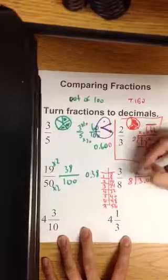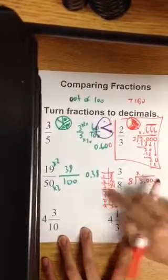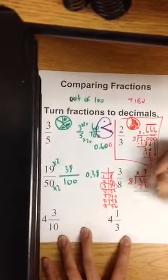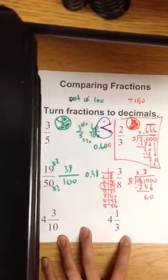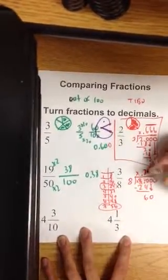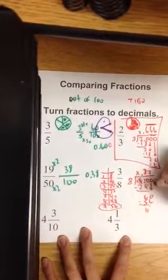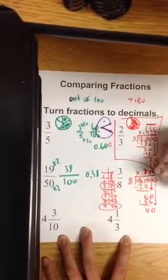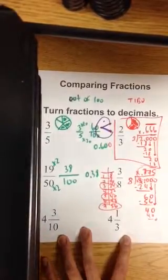So can 8 go into 3? No. Decimal point. Can 8 go into 30? 3 times, which is 24. Regroup. 6 is the remainder. Bring down a 0. Who is closest to 60? 7 is. That's 56. 60 minus 56 is 4. I bring down the 0. Can 8 go into 40? 5 times. So you have 0.375.